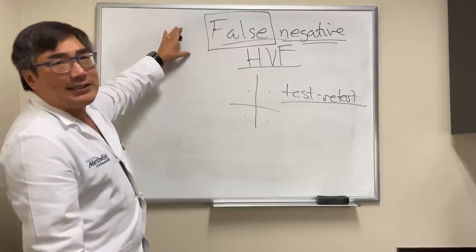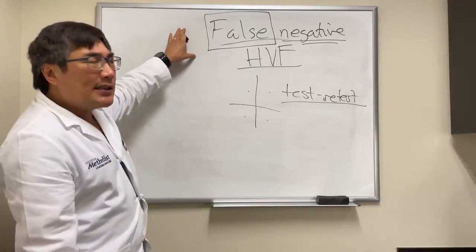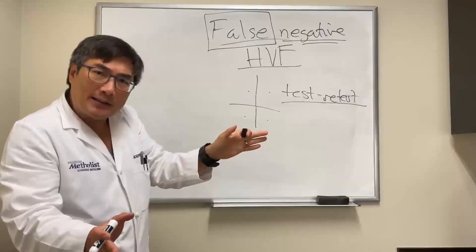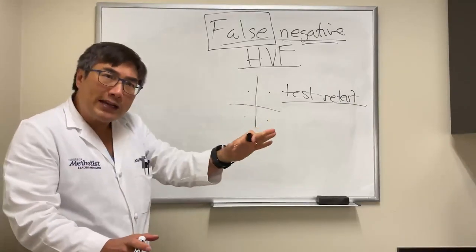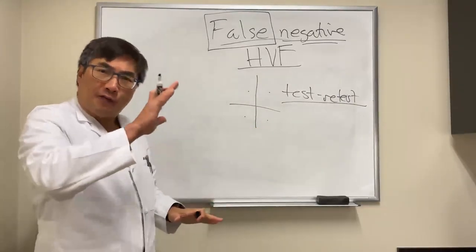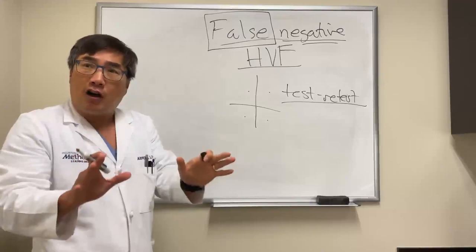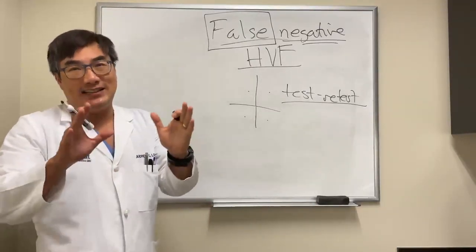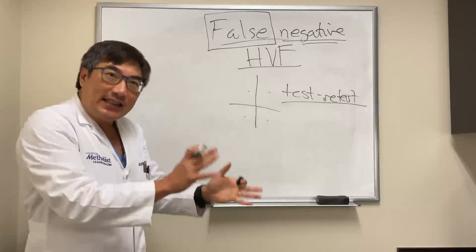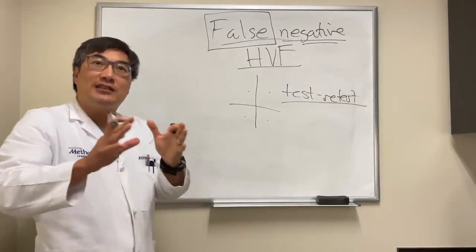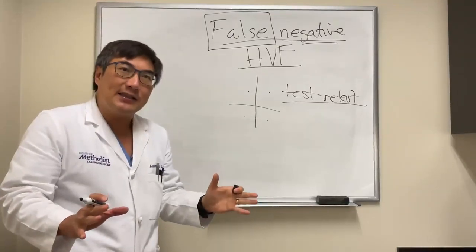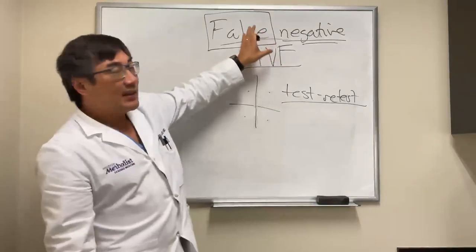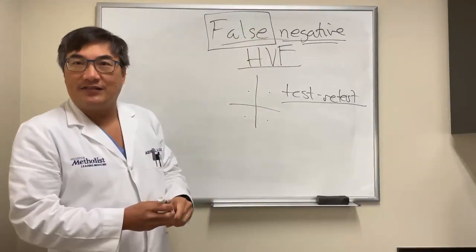That applies to any test. Any test with a negative result has competing hypotheses — it could be a true negative or a false negative. The way to resolve that is by repeating the test. If a test is negative but you still think it's positive, you repeat it. If the second test is positive, then maybe the first test was a false negative.